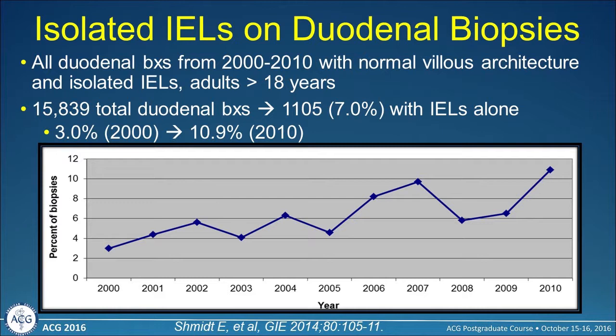Over the years, there has been a growing trend of pathologic reads of small bowel biopsies with increasing IELs but without villous atrophy. We looked at this at our institution over more than a 10-year period. Of over 16,000 duodenal biopsies during that time frame, an average of 7% had that histologic finding. From the year 2000 — where it occurred in only 3% of biopsies — it rose to almost 11% by 2010, a significant trend even when corrected for the 2005 change in definition.